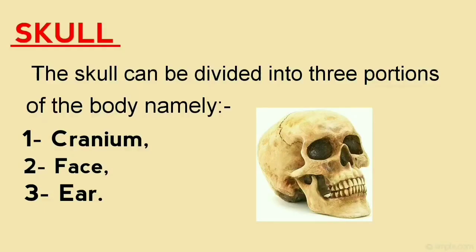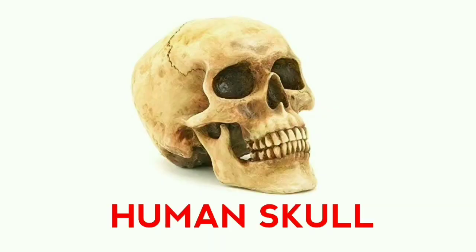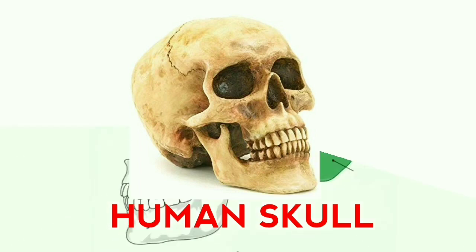The skull can be divided into three portions: first, the cranium; second, the face; and third, the ear. The cranium consists of eight bones. It forms the floor for the brain to rest on and provides a helmet-like covering over it.